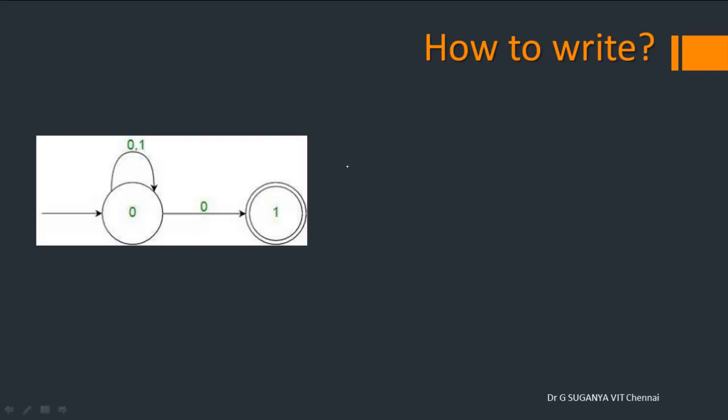Moving on, we will take one more simple example, which is the start state. It is 0. Since it is a self loop, as usual, 0 plus 1 the whole star. Then how to reach the final state? It is 0. That's it. Very simple.